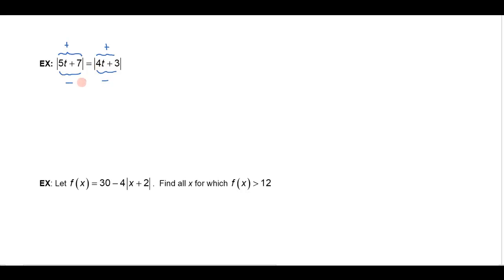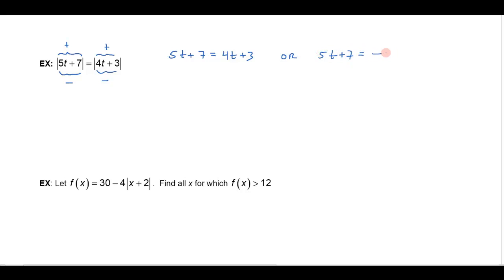The negative being outside the whole thing. Or you could have the negative of this whole quantity equaling the positive of this whole quantity, or the negative equaling the negative. But if you boil that down, the positive equaling the positive is the same thing as the negative equaling the negative, because you just divide by negative. So you actually still end up with just two basic parts: either 5t plus 7 equaling 4t plus 3, or 5t plus 7 equals the negative of 4t plus 3. It wouldn't really matter which side you put the negative on.